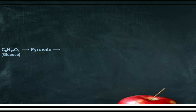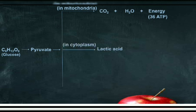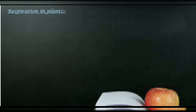Now see the flow chart. A glucose molecule has six carbons. It first breaks down into pyruvate, also called pyruvic acid, which has two molecules each with three carbons. In the mitochondria: aerobic respiration produces carbon dioxide, water, and approximately 36 ATP. In the cytoplasm: anaerobic respiration produces lactic acid and energy. Fermentation produces C2H5OH plus carbon dioxide plus 2 ATP. Learning this flow chart will help answer exam questions.